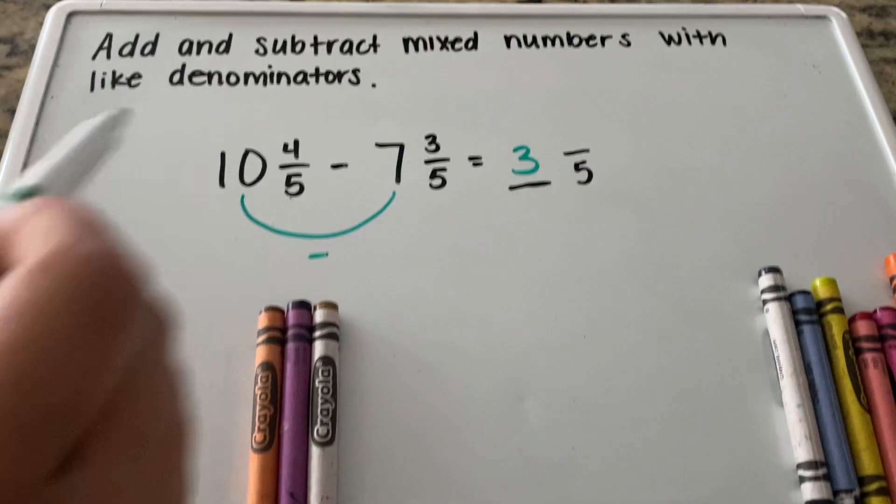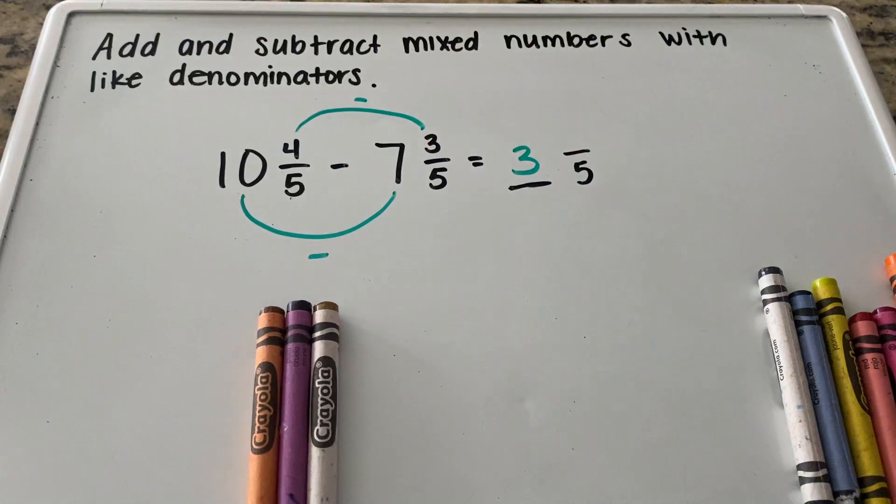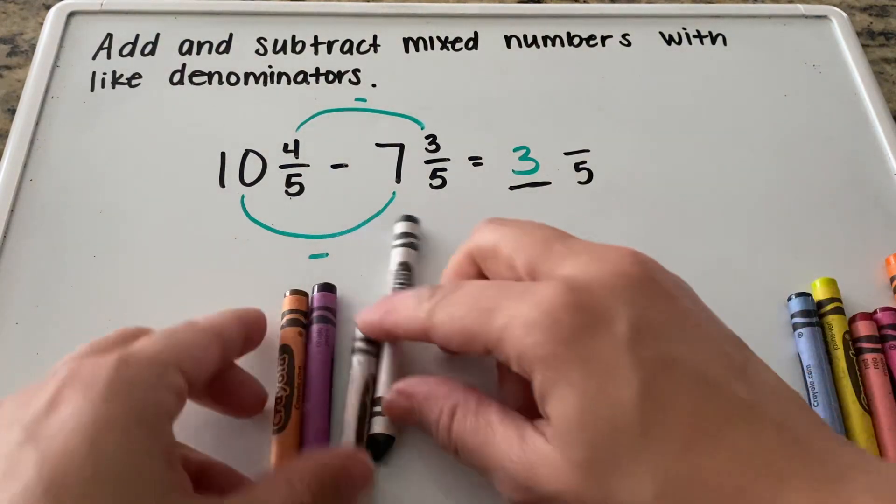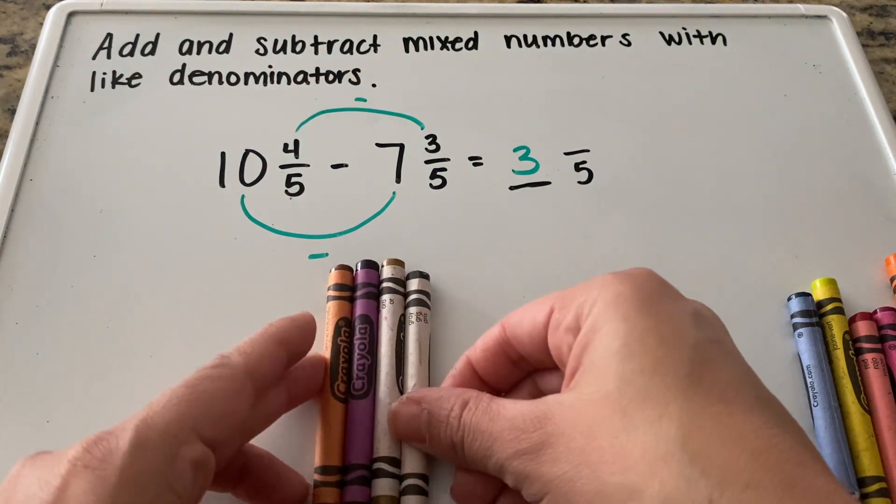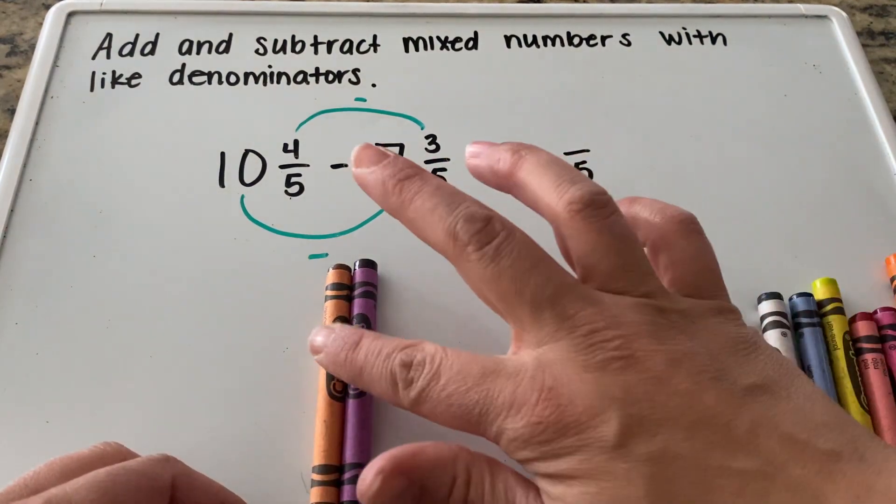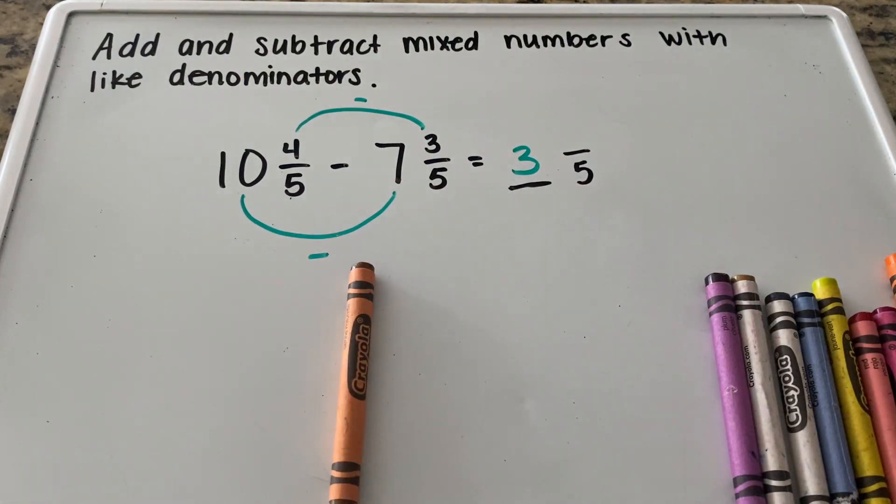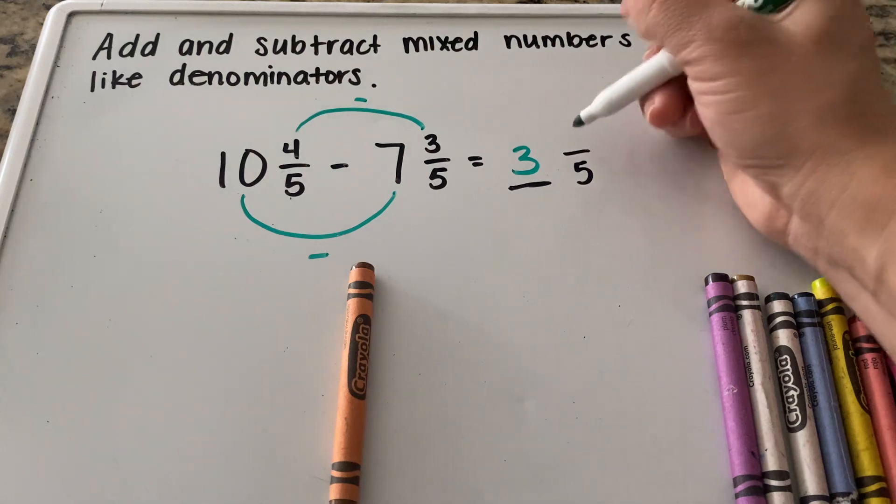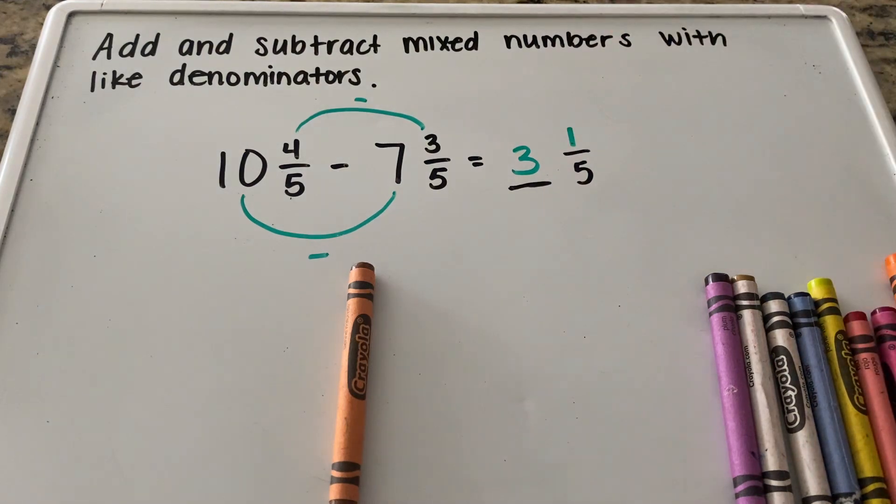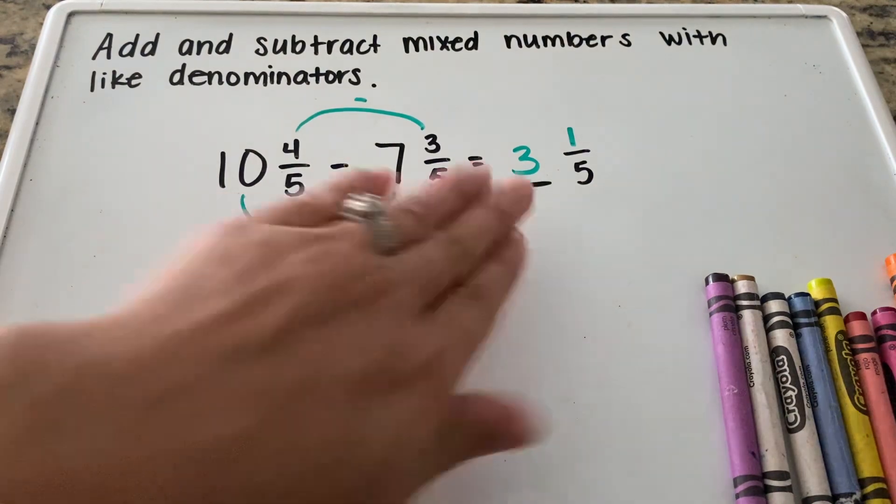Then we're going to take our numerators on top. Our four and our three and we're going to subtract those. So what is four minus three? I have my four crayons right here and I need to take away three. One, two, three. I have one crayon remaining. So four minus three is one. And our answer now is 3 and 1/5.